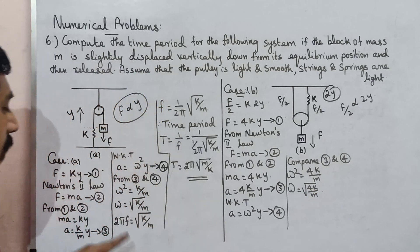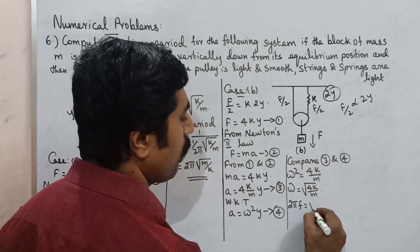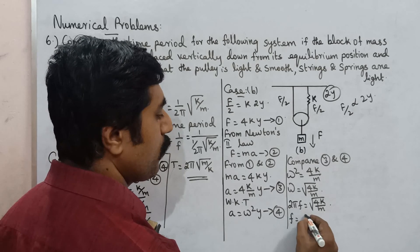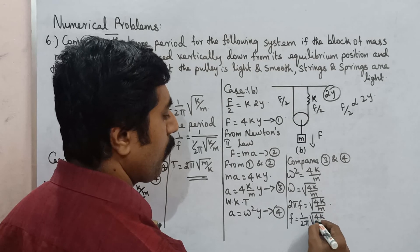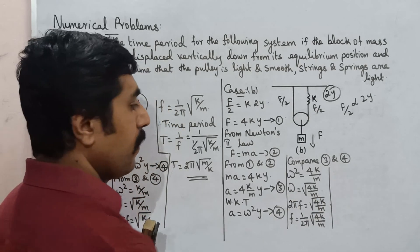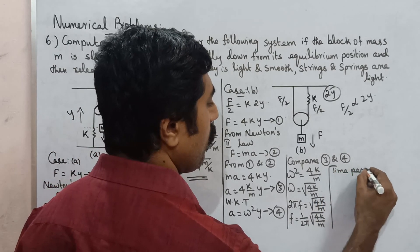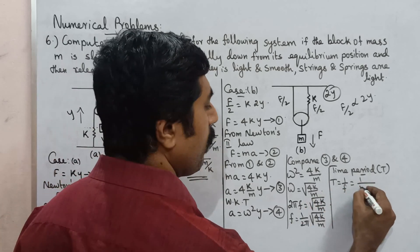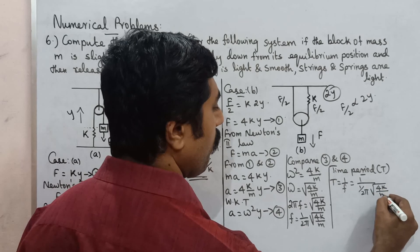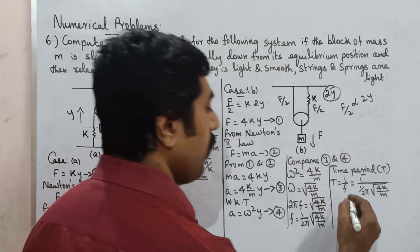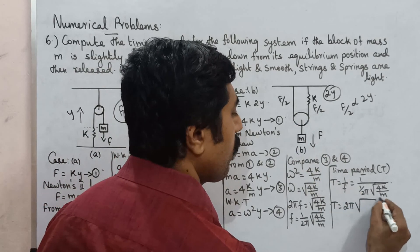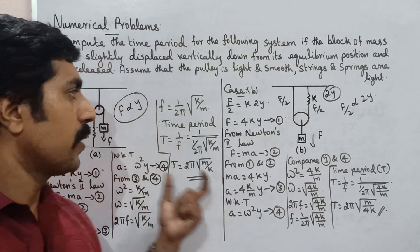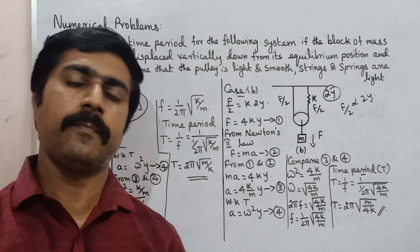So 2π f equals the square root of 4k/m. The time period T is the reciprocal of frequency: T equals 1/f equals 1 divided by [(1/2π) times the square root of 4k/m], which gives T equals 2π times the square root of m/4k. These are simple problems, so practice and share. All the best. Thank you.